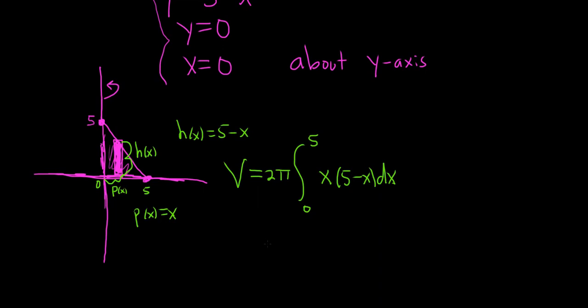Okay, now we carefully distribute and integrate. So this is 2 pi, definite integral from 0 to 5. So 5 times x is 5x minus, and then x times x is x squared. And then we have a dx here.